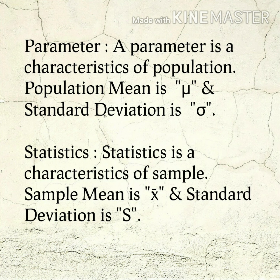On the next slide, I am going to discuss what is a parameter and what is statistics. A parameter is a characteristic of a population, and statistics is a characteristic of a sample. So when we work out certain measures such as mean, median, mode, or standard deviation from a population, they are called parameters. And when we work out the same measurements from samples, they are called statistics.